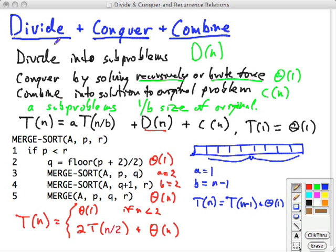That doesn't even fit this form. But many of our divide and conquer problems do fit this form, where you take a problem, divide it up into pieces, of which you have to solve sometimes more than one, not always. Remember, with binary search, a was 1 and b was 2.